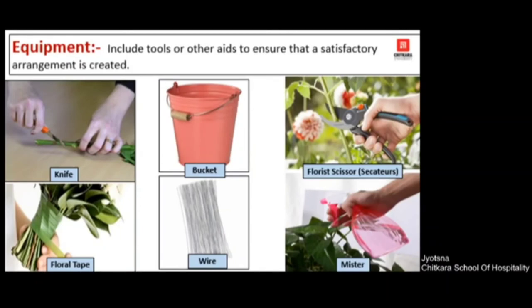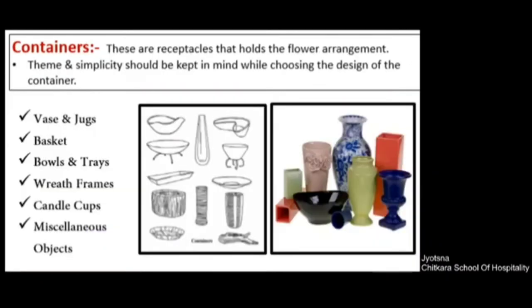The next ingredient is container. A container again plays a very important role and has to be selected very wisely in combination with the flowers, the color of the flowers, size, and the foliage and fillers you are using. Different containers can be used — for example, bars, jugs, baskets, trays, different bowls, candy cups, and some miscellaneous objects. For example, a hat can also be used as a container.